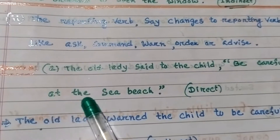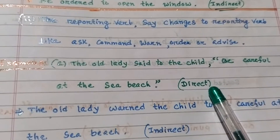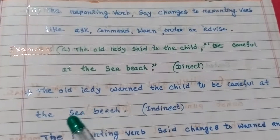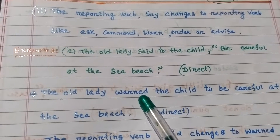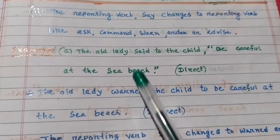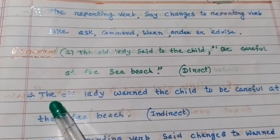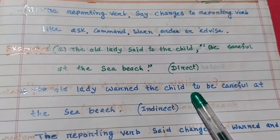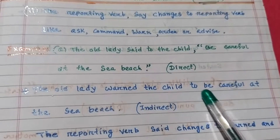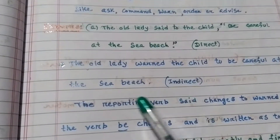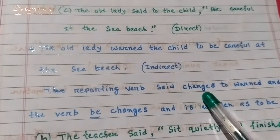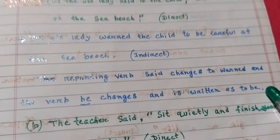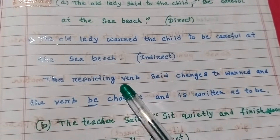Example A: Direct speech — 'The old lady said to the child, be careful at the sea beach.' In indirect speech: 'The old lady warned the child to be careful at the sea beach.' Here 'warned' replaces 'said', and the verb 'be' changes to 'to be' as the infinitive form.